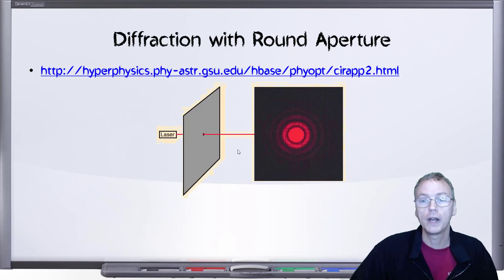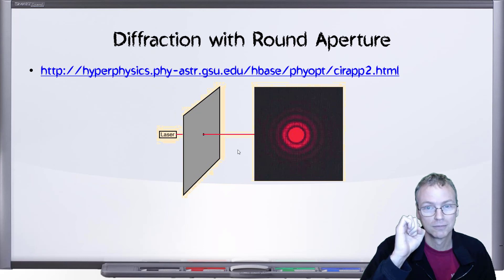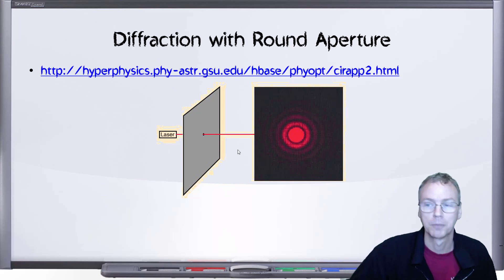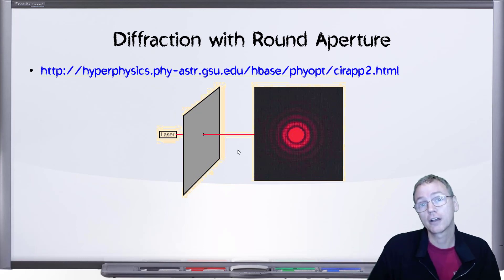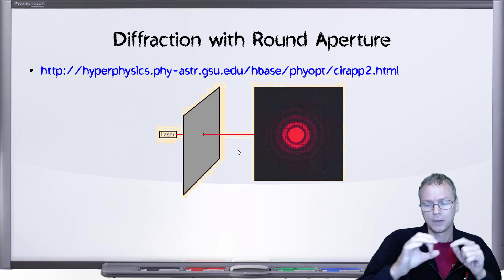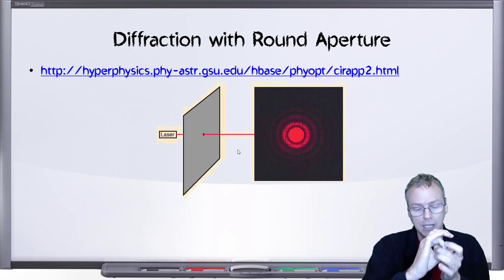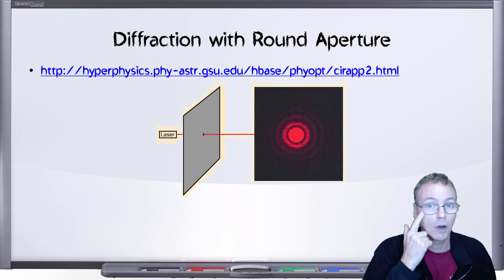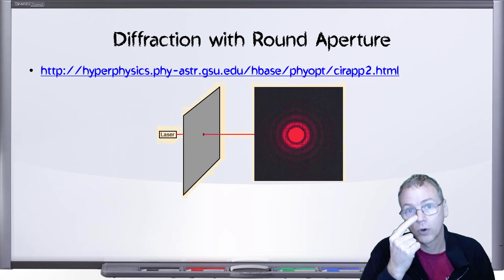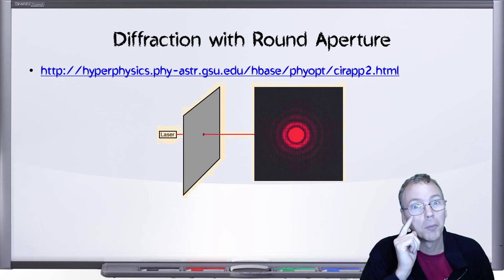How about what it looks like when you go through a pinhole or a round aperture? Aperture just means hole. In photography, that's what they call the hole inside the lens of the camera that lets the light through. And with your eye, we can think of your pupil — the black part — the light is going through the iris.